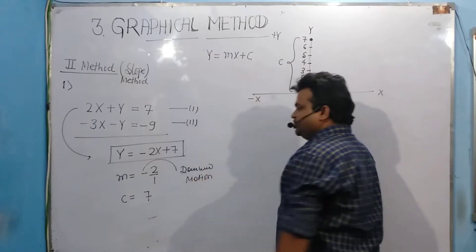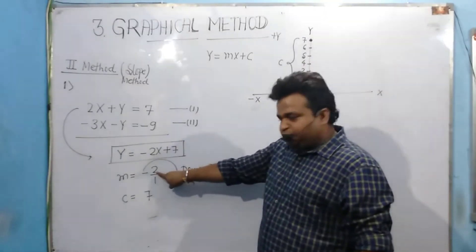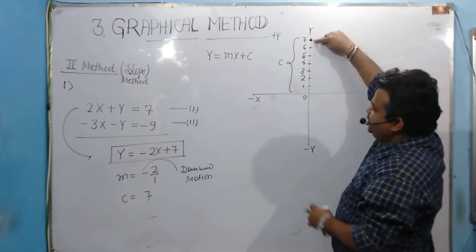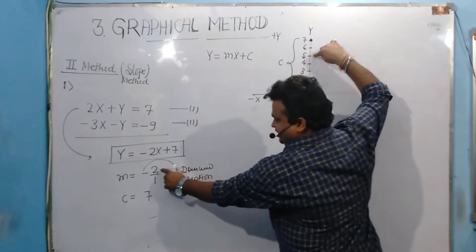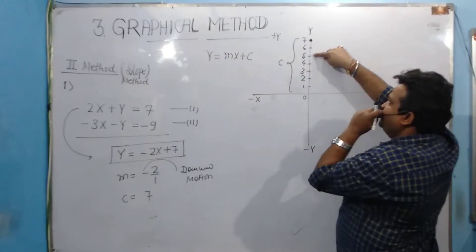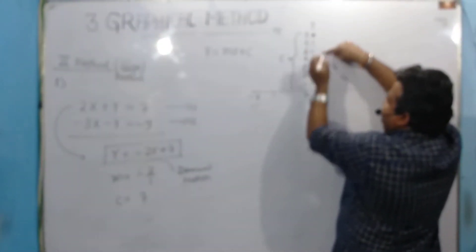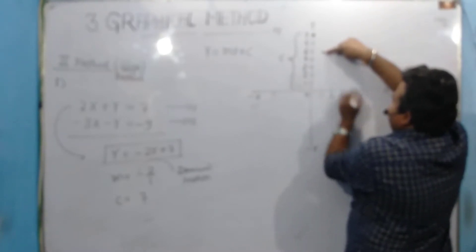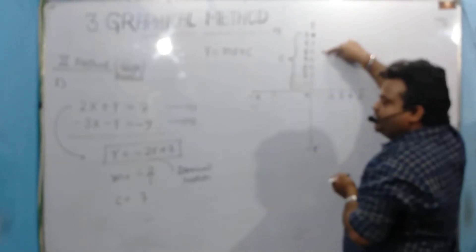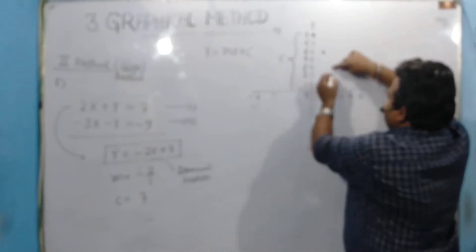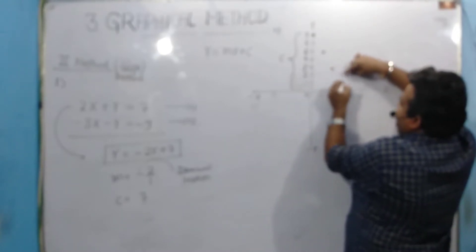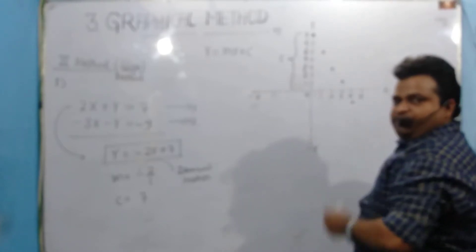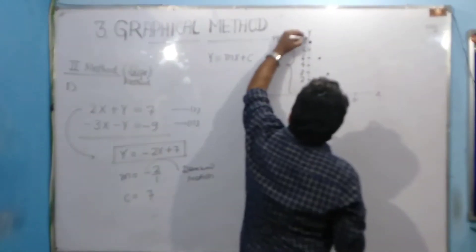The slope is -2, meaning 2 steps downward and 1 step rightward. Starting from the c point, I move 2 steps downward — 1, 2 — because of the numerator value 2, and then 1 step rightward. I repeat: 2 steps downward, 1 step rightward — again and again to get multiple points to draw a straight line.